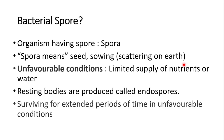These bacterial spore structures are produced under unfavorable conditions — that is, under limited supply of nutrients and water. Bacteria will produce special resting body cells called endospores. These endospores have the capacity to survive for an extended period of time under unfavorable conditions, including limited supply of nutrients and water.